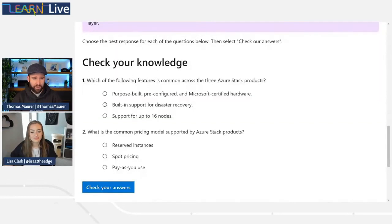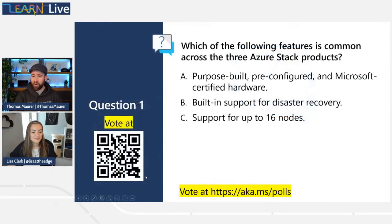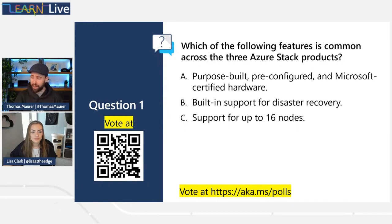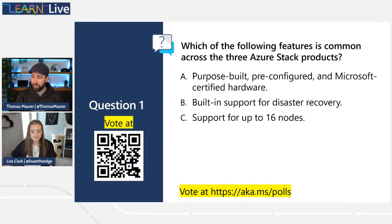We have a knowledge check. You can scan the QR code or go to aka.ms/polls to vote. The question is: which of the following features is common across the three Azure Stack products? A: purpose-built, pre-configured, and Microsoft-certified and validated hardware. B: built-in support for disaster recovery. Or C: all of these support up to 16 nodes. This is an interesting question - let's discuss.